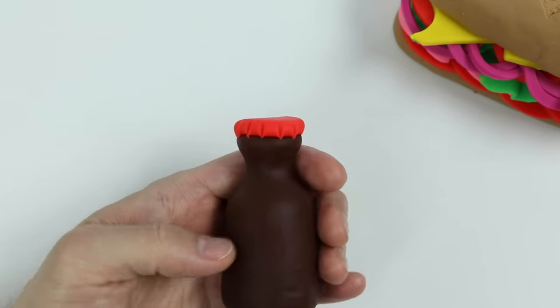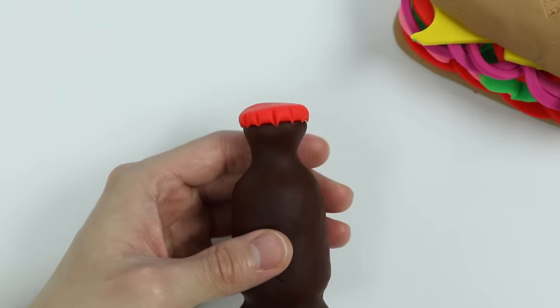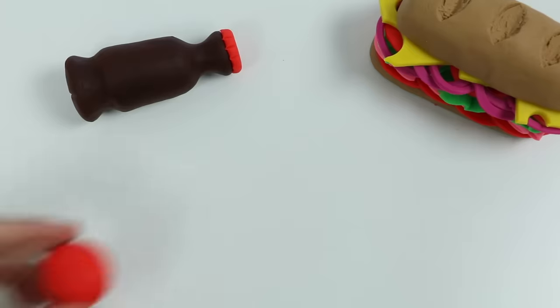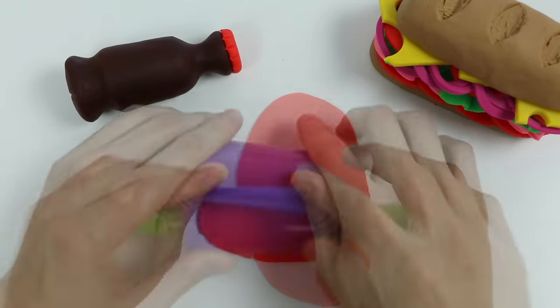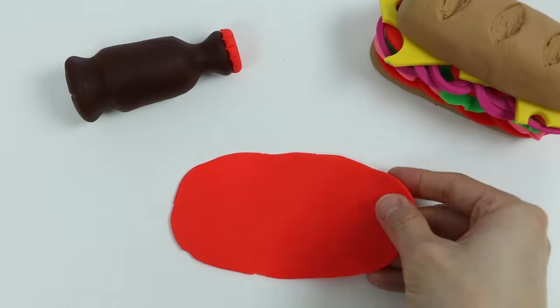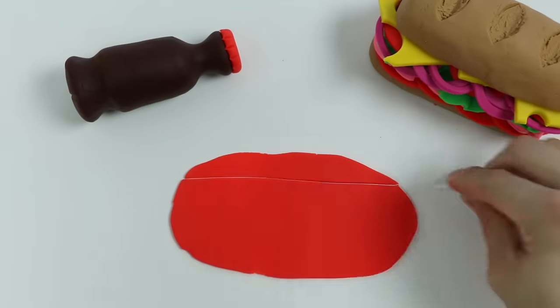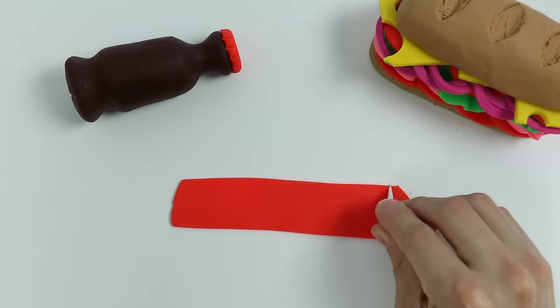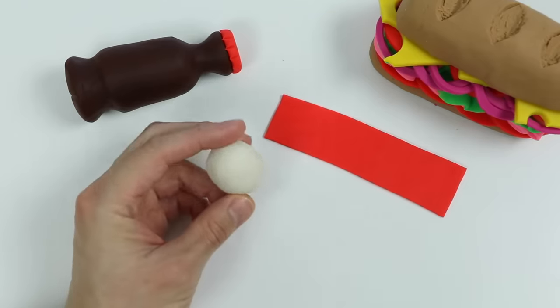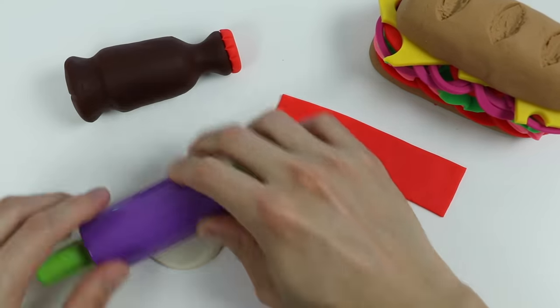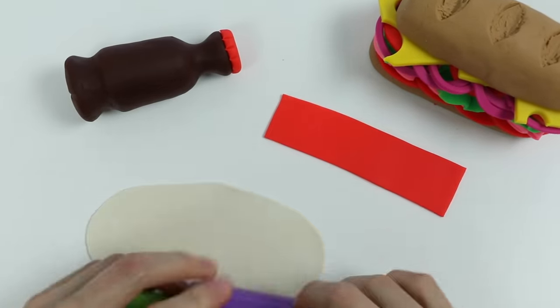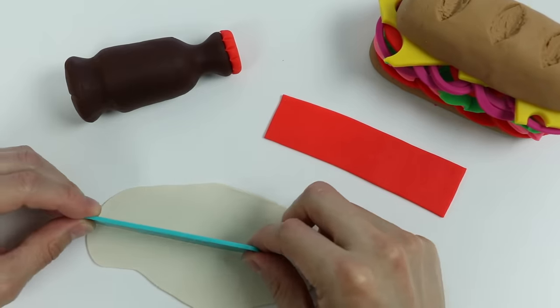Perfect, we just sealed our soda in the bottle. Now let's make the label. Roll out some red Play-Doh. Now let's make a rectangular shape. All right, now let's roll out some white Play-Doh.